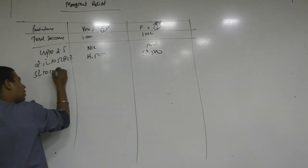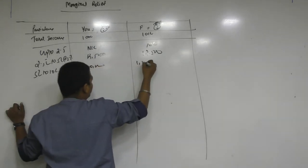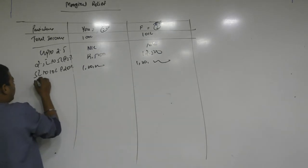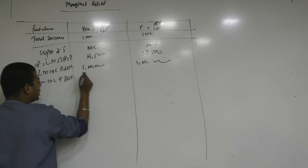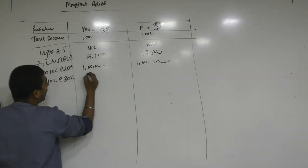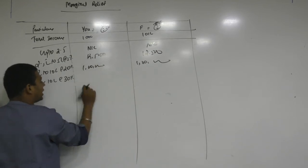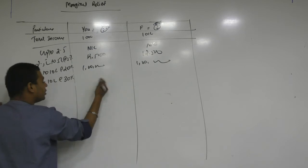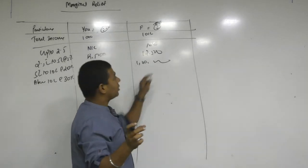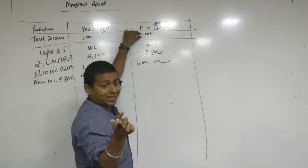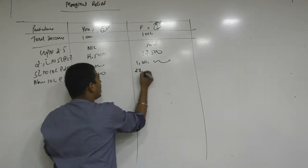Then 5 lakh to 10 lakh at the rate of 20%. You are going to pay 1 lakh. Your friend is also going to pay 1 lakh. Then above 10 lakh at the rate of 30%. That amount here is 97 lakh because 90 lakh multiplied by 30%, 27 lakh. Here that amount is 91 lakh. Income above 10 lakh is 91 lakh. 91 lakh multiplied by 30% is 27 lakh 30,000.